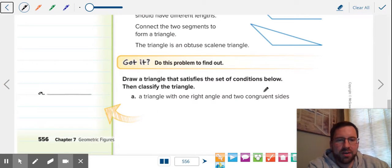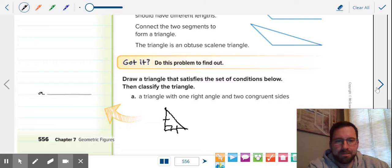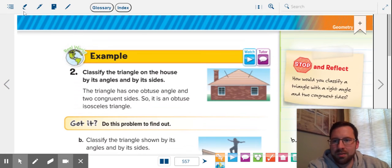Draw a triangle that satisfies the set of conditions below. A triangle with one right angle and two congruent sides. The easiest way to do this is to try and draw the legs, the sides that touch the right angle, equal. The connecting side cannot be the same length as the legs. How do you show that they're the same length? You draw these little tick marks to show that this is an isosceles right triangle or a right isosceles triangle.